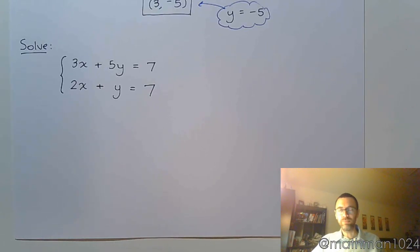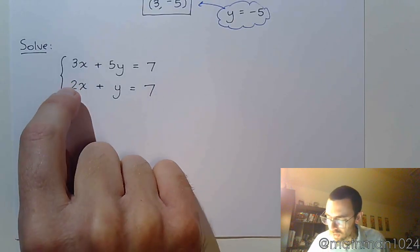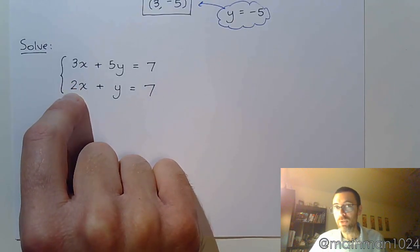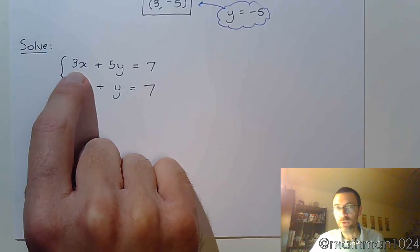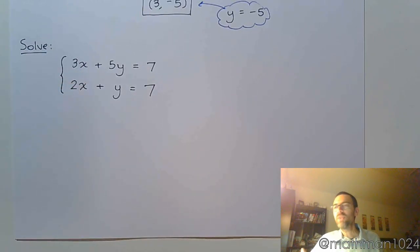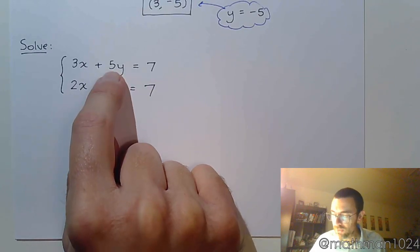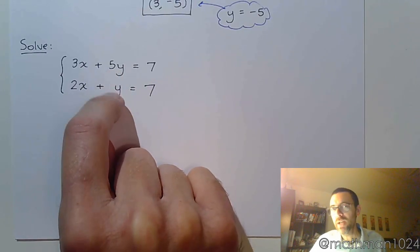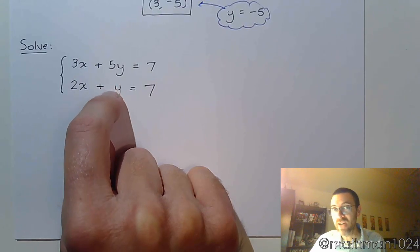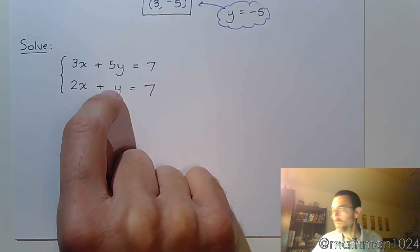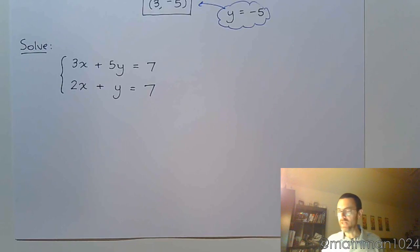And you want to do it in such a way so that you have coefficients that are opposites of each other. So you might try to find something you can multiply times 2 so that it will match with 3. But if you do that, you're going to have to work with fractions. Instead, look at the y's. This is a 5y and this is a 1y. If I could multiply this by something to get a negative 5 here, I'd be in really good shape. In fact, that's what I'm going to use is negative 5.